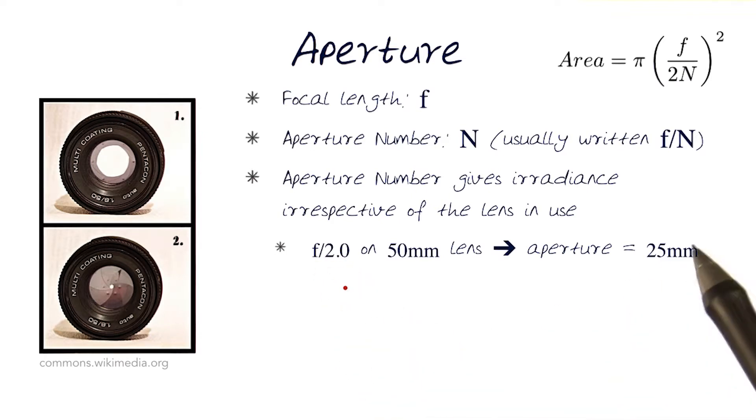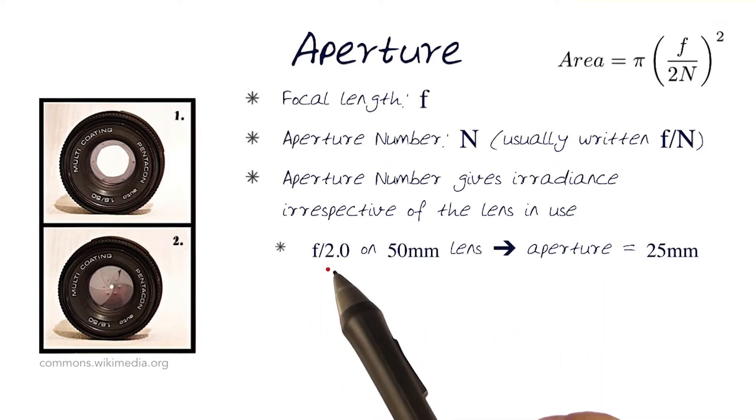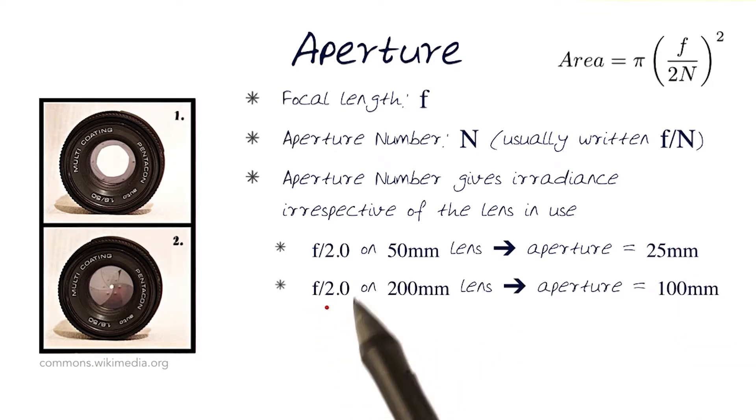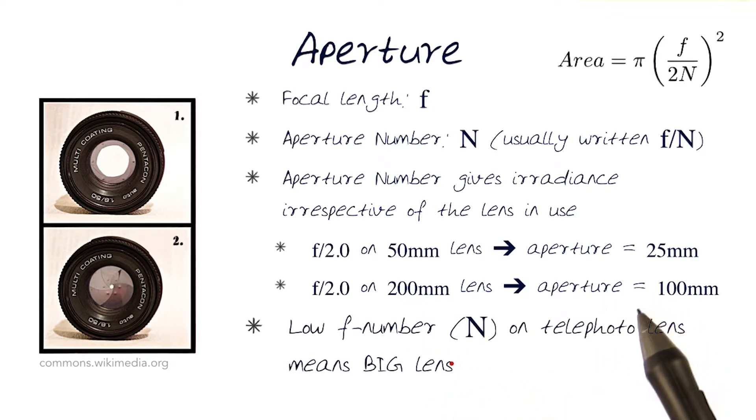For example, when somebody gives you a lens f/2.0 on a 50 millimeter lens, the aperture would be 25 millimeters. So an f/2 aperture number for a 50 millimeter lens is going to basically say that the aperture size is 25 millimeters. For an f/2 N number for a 200 millimeter lens, the aperture would be 100 millimeters.